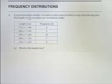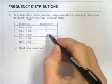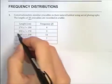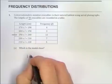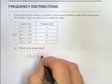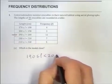The first sort of question you're going to be asked is about the modal class. Which one is the modal class? The modal class is the one with the highest frequency. So we go down here. 11 is the highest frequency, so this one here is the modal class. So we just write that down: 190 is less than or equal to L is less than 200.